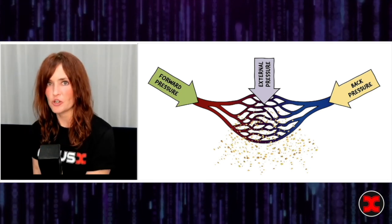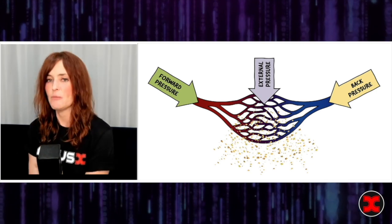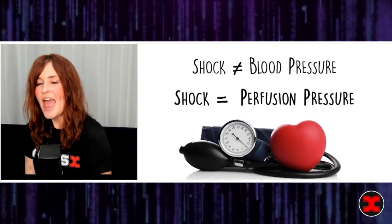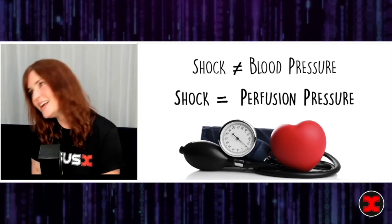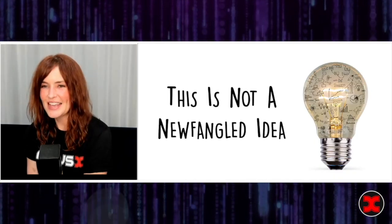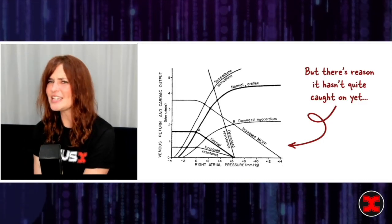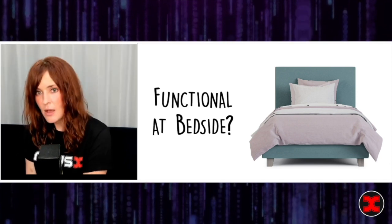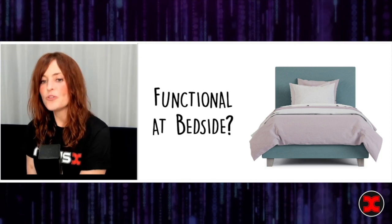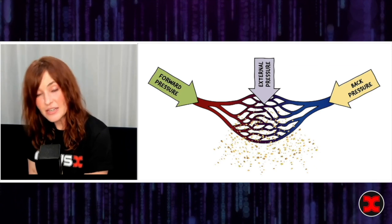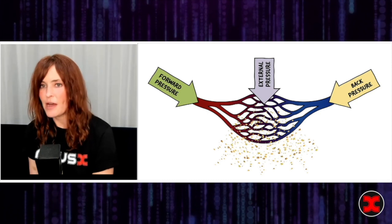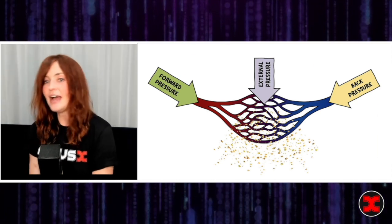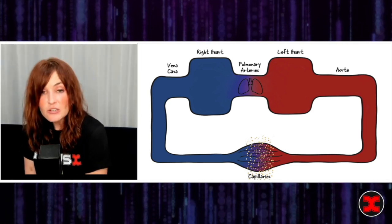I've stopped thinking about shock as four categories or pipes-pump-tank and started thinking about it as a three-pressure model: forward, backward, and external. That really helps me stop thinking about blood pressure and start approaching shock as a perfusion pressure problem, not just a blood pressure problem. This isn't a new idea, but the reason it hasn't caught on is that mapping it out in the traditional way isn't super functional at the bedside. What's made a difference for me is coming up with a way to think about perfusion pressure that I can actually use at the bedside.